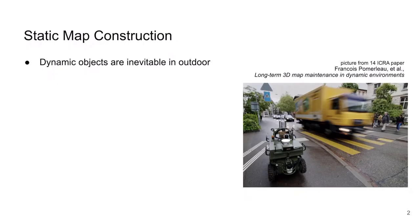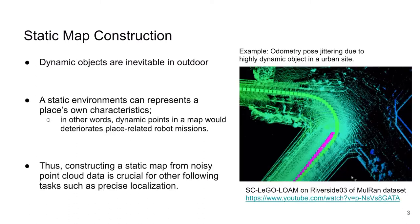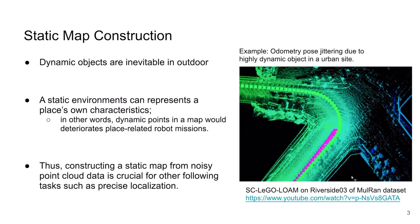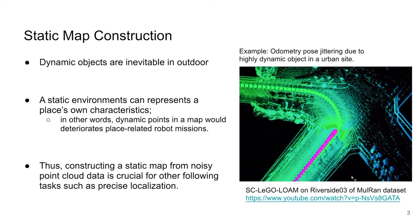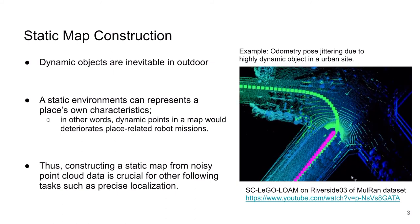In the most outdoor environments, dynamic objects are inevitable and exist in the robot sensor data. The dynamic points deteriorate robot mission's performance. For example, at the right side in this figure, the robot is stopped, but the robot pose from the LiDAR odometry is jittering because of nearby dynamic objects in complex urban sites.